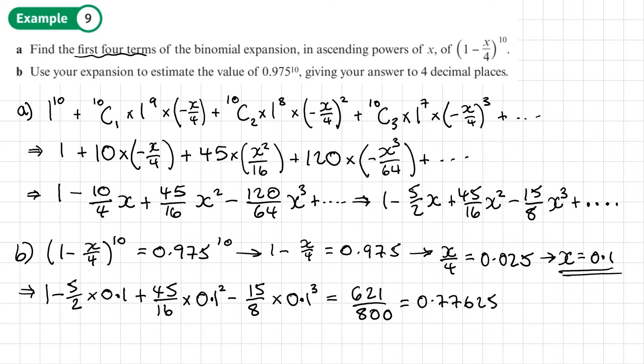Now, what were we asked to do in the question? We were asked to find an estimate of 0.975^10. And our estimate, this number here, to 4 decimal places, will be 0.7763 when it's rounded to the required number of decimal places.